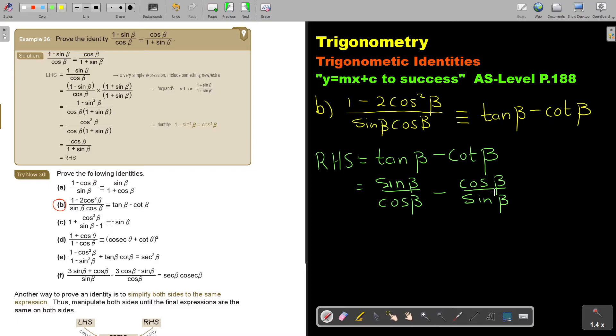Now I find the LCM, the lowest common multiple, which is, in this case, the LCM is cos beta sin beta.